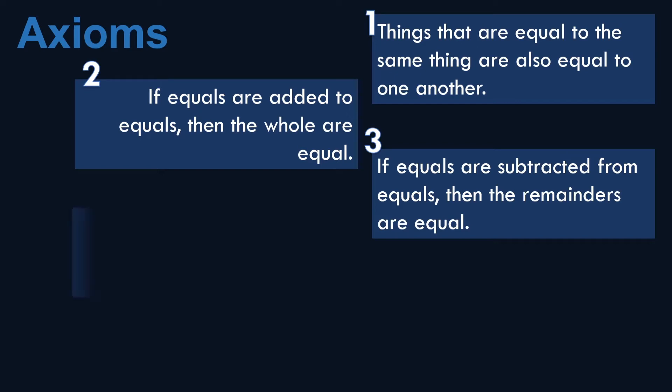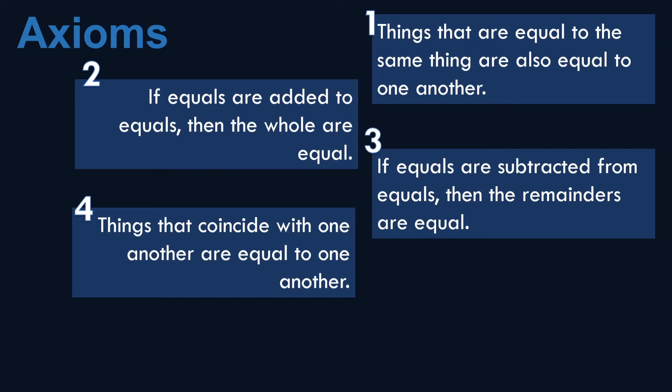Number four, things that coincide with one another are equal to one another. This is comparable to how we define congruence.